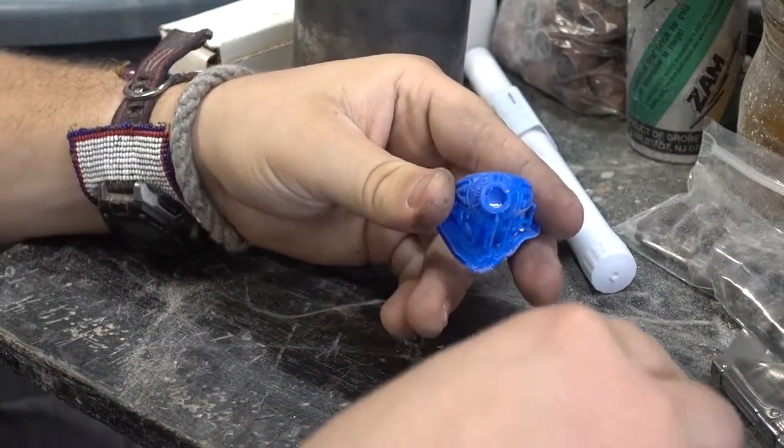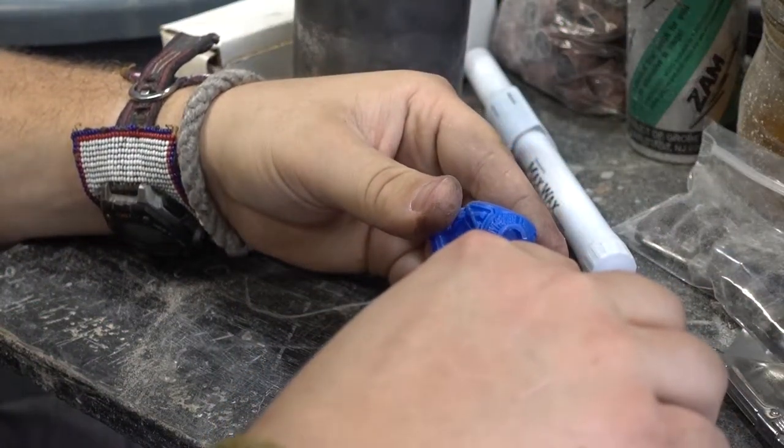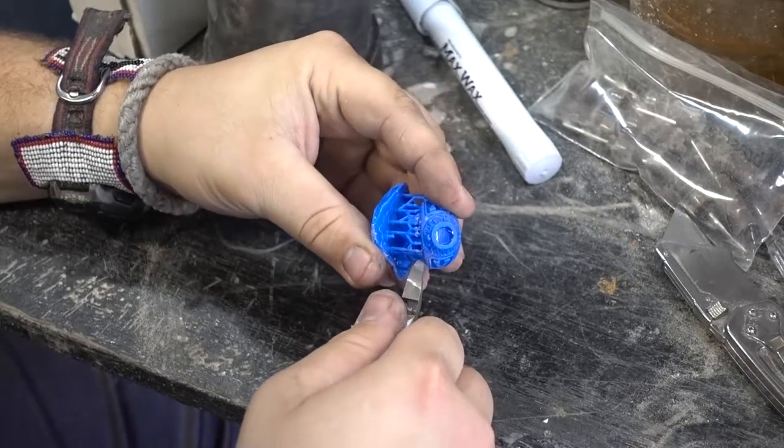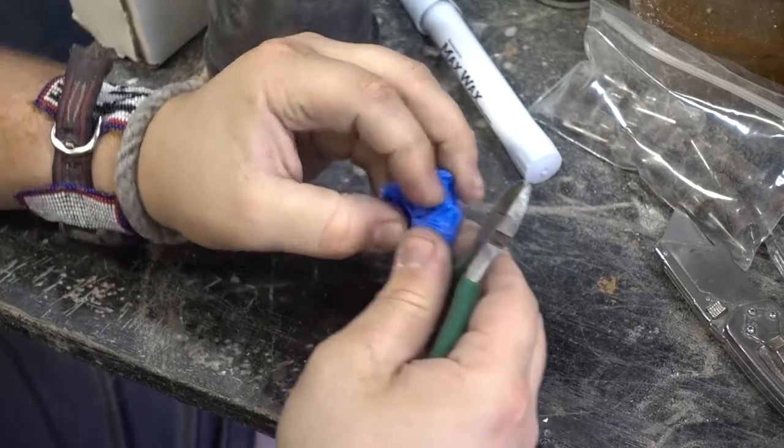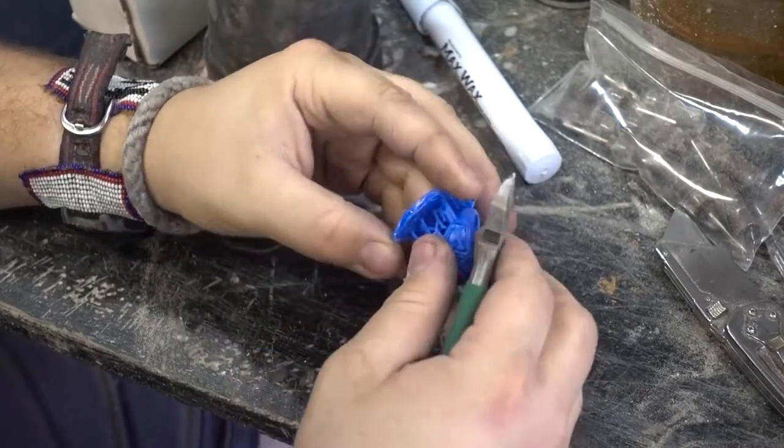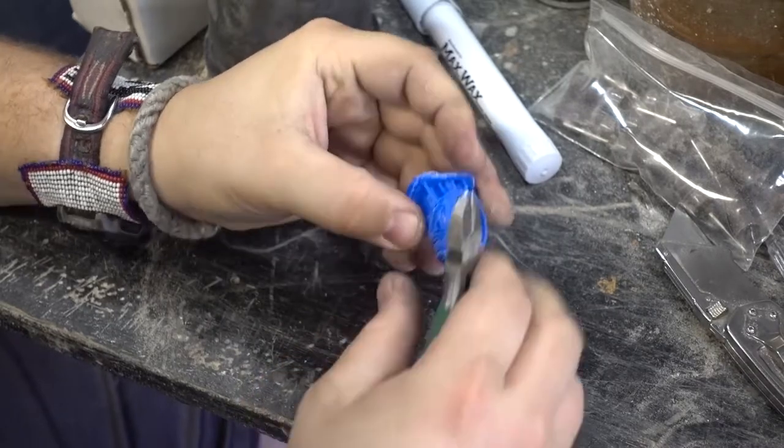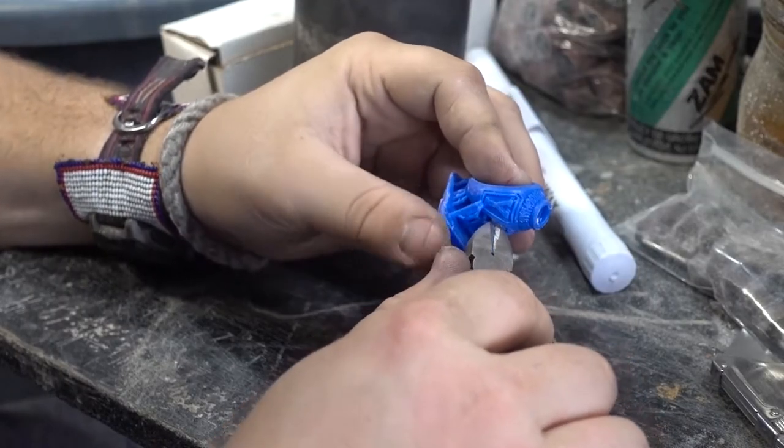As you can see, there's the final ring, but we have to do some final processing before we actually cast. We need to take off these supports—they're just there so when it's 3D printing there isn't any sagging or parts that fall.